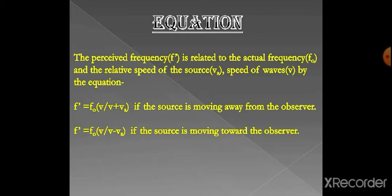F' = F0 × V/(V+Vs) if the source is moving away from the observer. F' = F0 × V/(V-Vs) if the source is moving towards the observer.